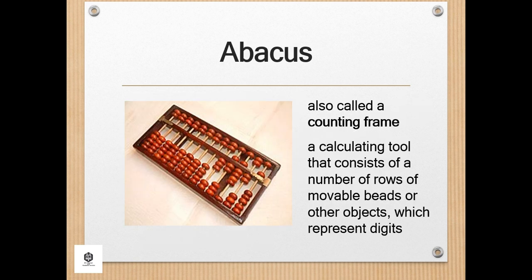The abacus, also called a counting frame, is a calculating tool that was in use in the ancient Near East, Europe, China, and Russia centuries before the adoption of the written Arabic numeral system. The exact origin of the abacus is still unknown. It essentially consists of a number of rows of movable beads or other objects which represent digits. One of two numbers is set up, and the beads are manipulated to implement an operation involving a second number, or even a square or cubic root.